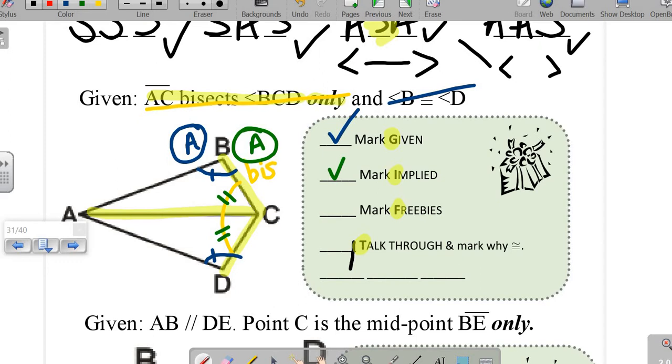Freebies are things that are always congruent but never marked for you. It's a reflexive side, reflexive angles, and vertical angles. Here we have a reflexive side, AC, hatch mark.